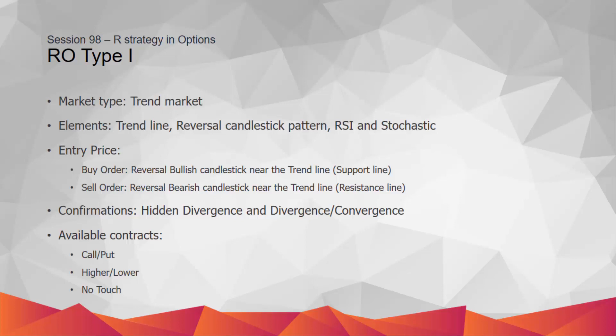The specifications of this strategy are as follows: it is suitable only for trend markets and can be applied on all symbols and all time frames. The elements are trend line, reversal candlestick pattern, RSI, and stochastic. The entry price for buy order is the reversal bullish candlestick pattern near the trend line or support line, and for sell order it is a reversal bearish candlestick near the trend line as resistance line. The confirmations are hidden divergence, as well as divergence and convergence.